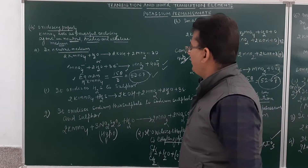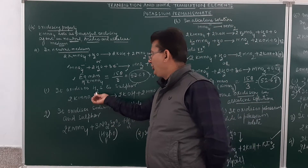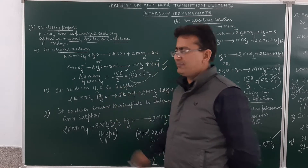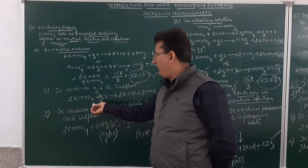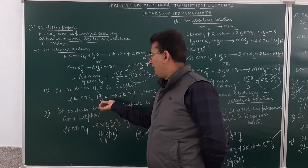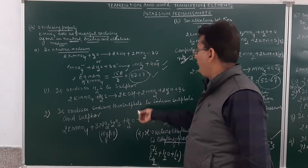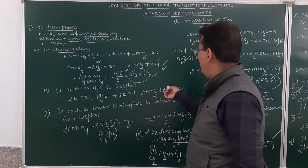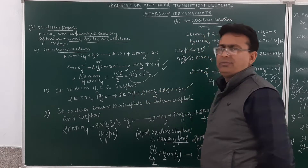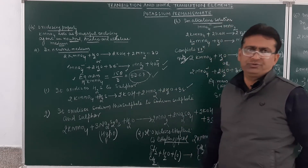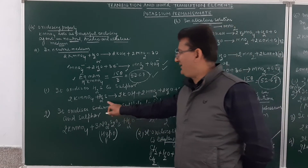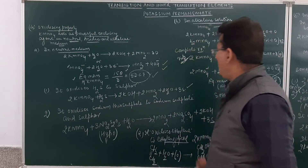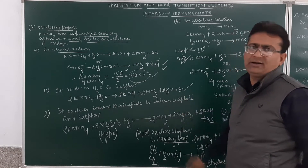Studying some of its oxidizing properties in neutral medium: it oxidizes hydrogen sulfide to sulfur. The equation — KMnO4 reacted with H2S — will result in the formation of potassium hydroxide, manganese dioxide, water, and free sulfur.